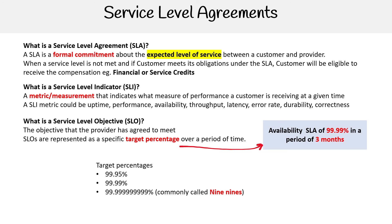That last one is not nine nines after the decimal point — we'd say nine nines of availability, or nine nines of durability. Then you have one that's for eleven nines, so you'd say nine 11s of durability.